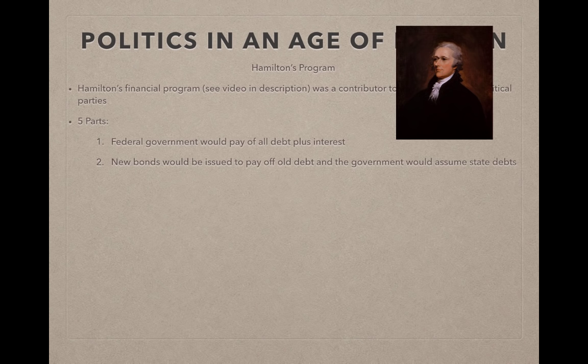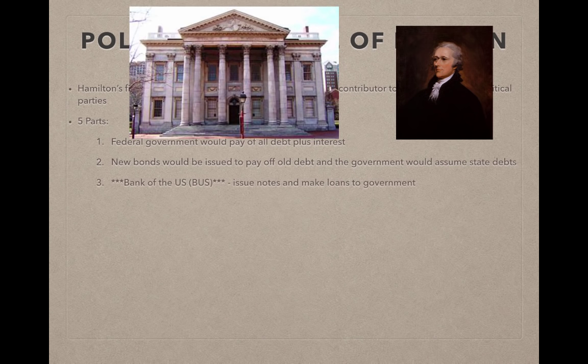Here's where it gets tricky: states like Virginia in the South had little to no debt, while Massachusetts had a lot of debt, so Massachusetts was getting bailed out while Virginia was getting nothing. The plan also created the Bank of the United States — also known as the BUS — which would issue notes and make loans to the government.